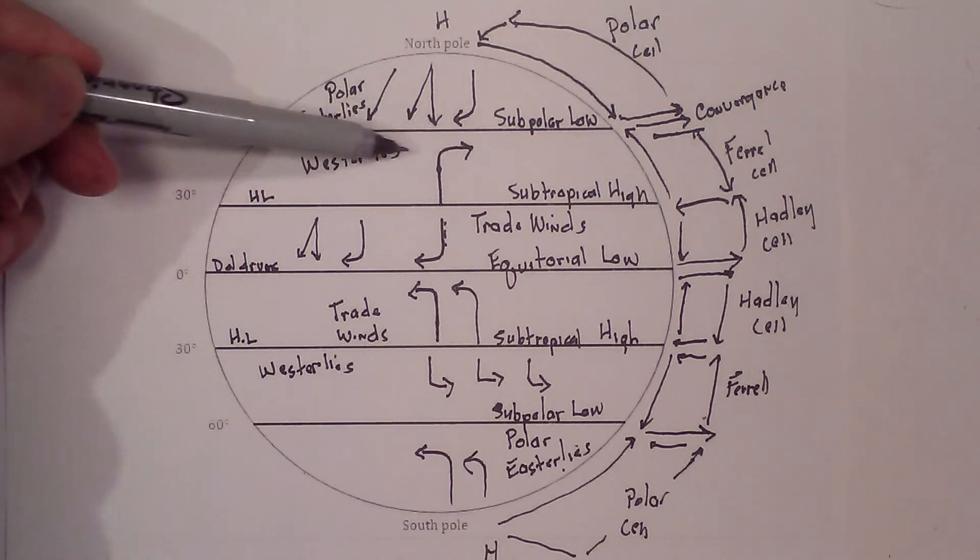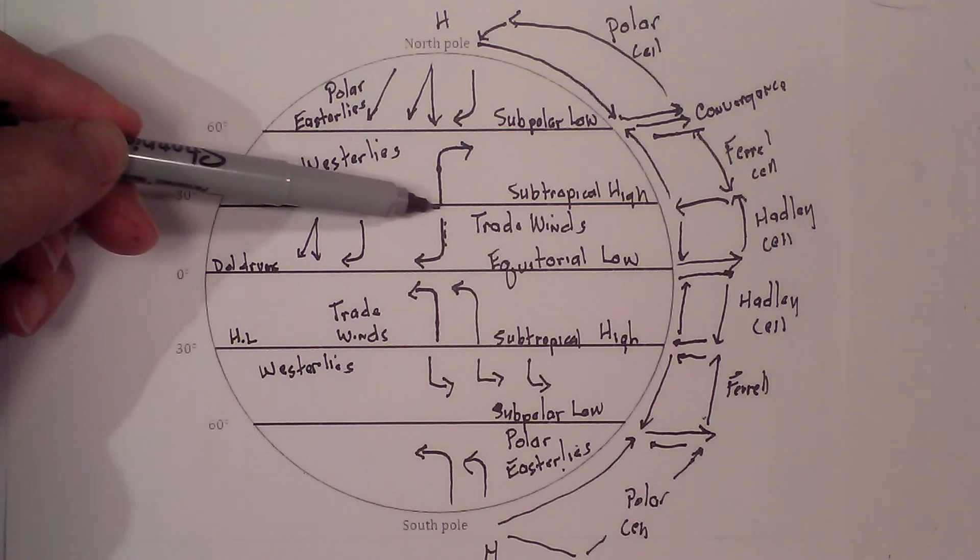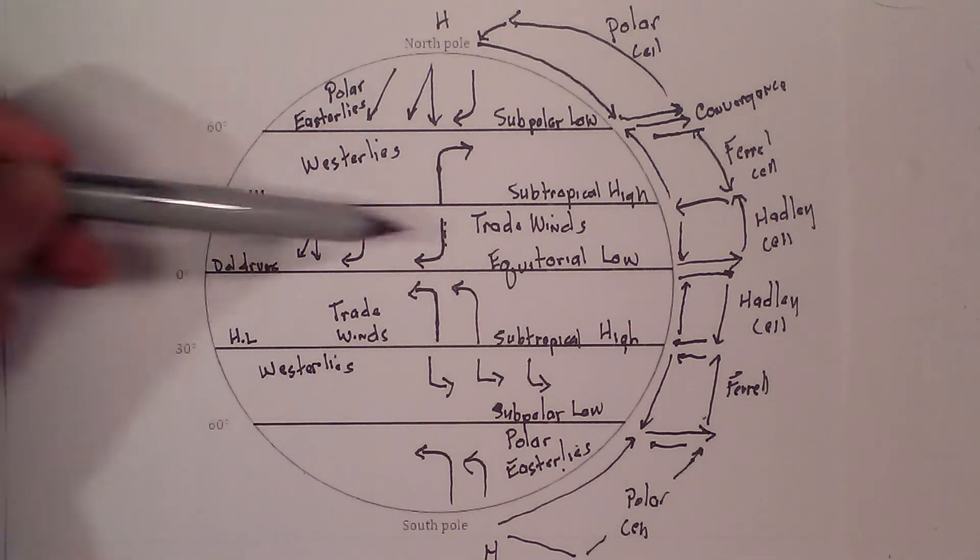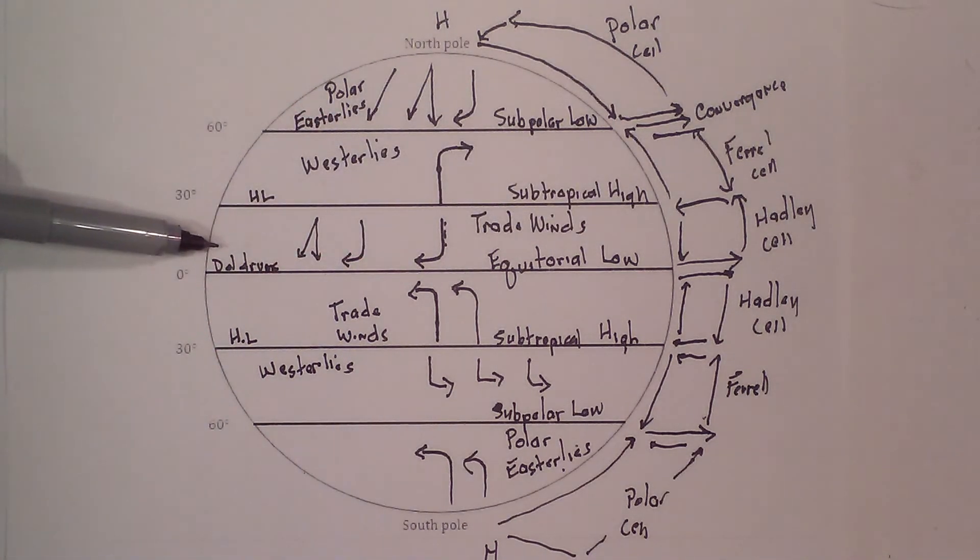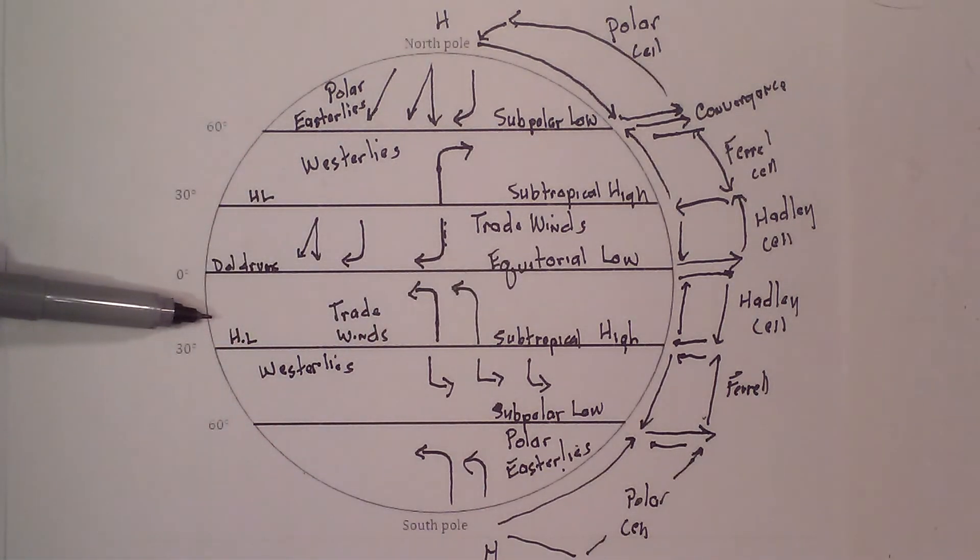You have the westerlies flowing from west to east. And then also a little southwest. And then we have the trade winds moving from the north to the west. So moving from east to west.